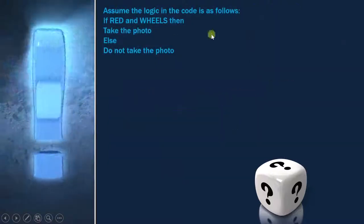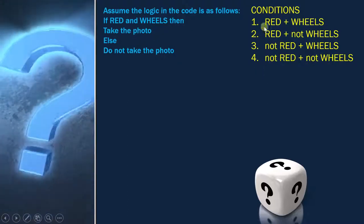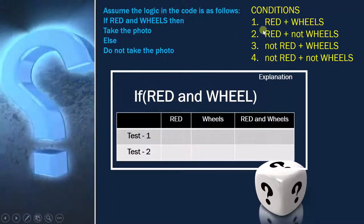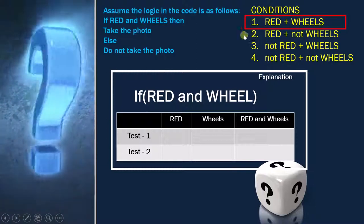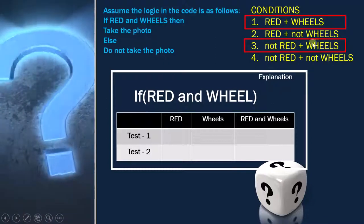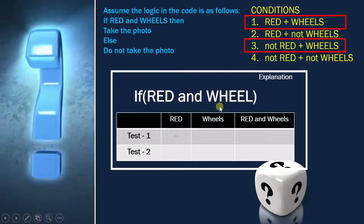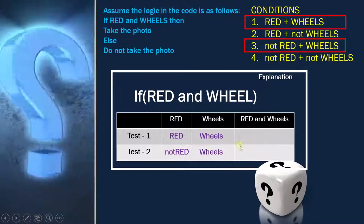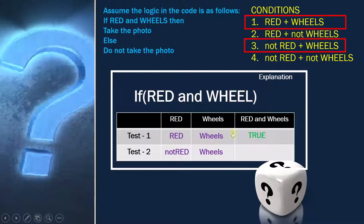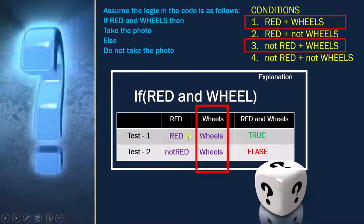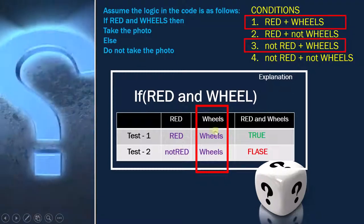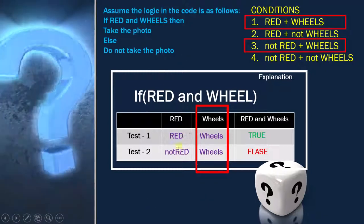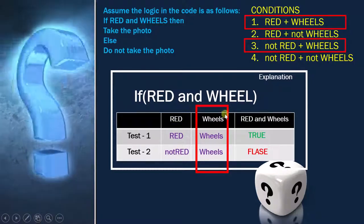Now taking tests 1 and 3: for 'red,' test 1 is red and test 3 is not red — so true and false, which is 100% coverage for red. But for 'wheels,' test 1 is wheels and test 3 is also wheels — both are true. Since wheels does not cover both true and false, tests 1 and 3 also do NOT achieve 100% condition coverage.